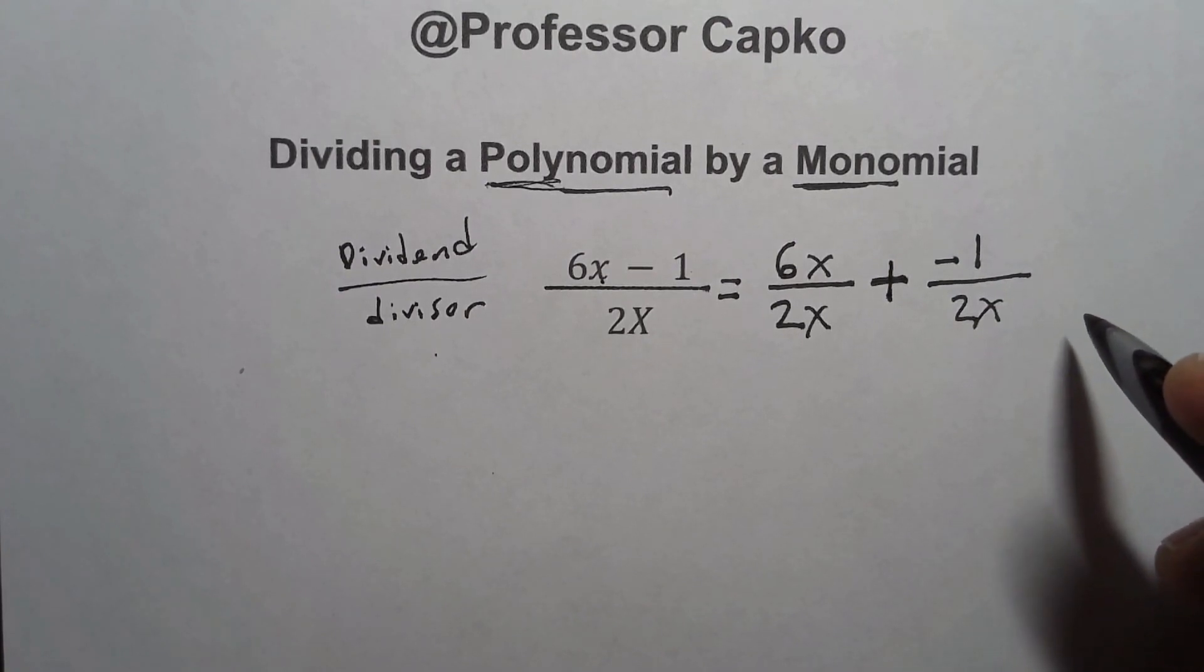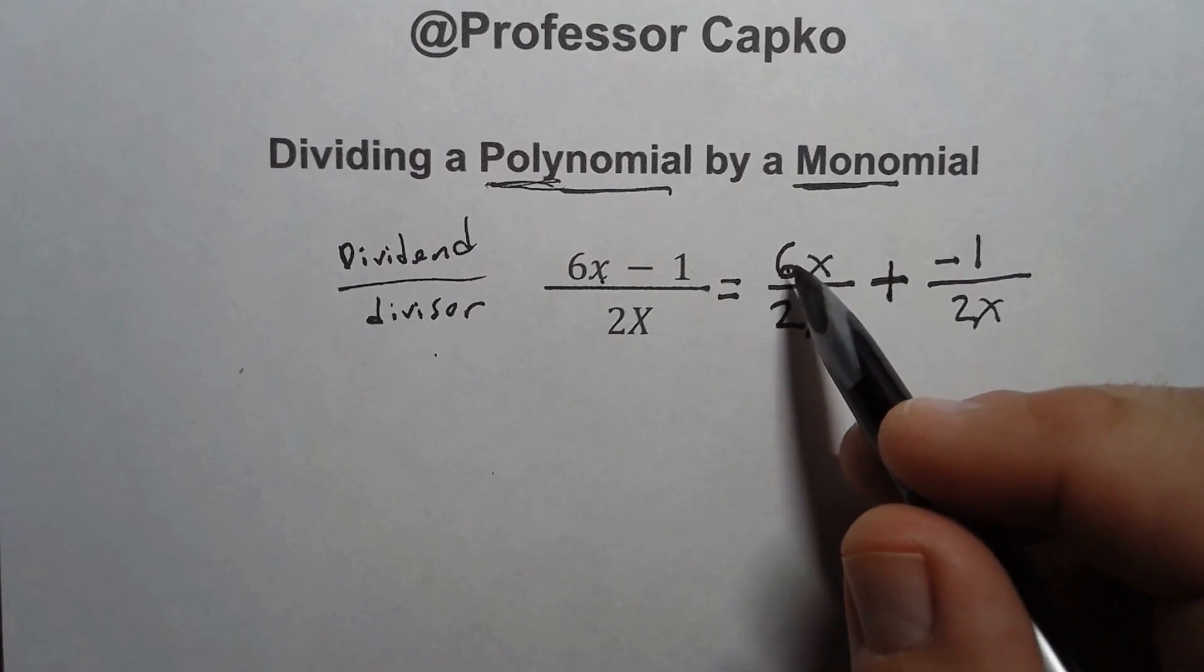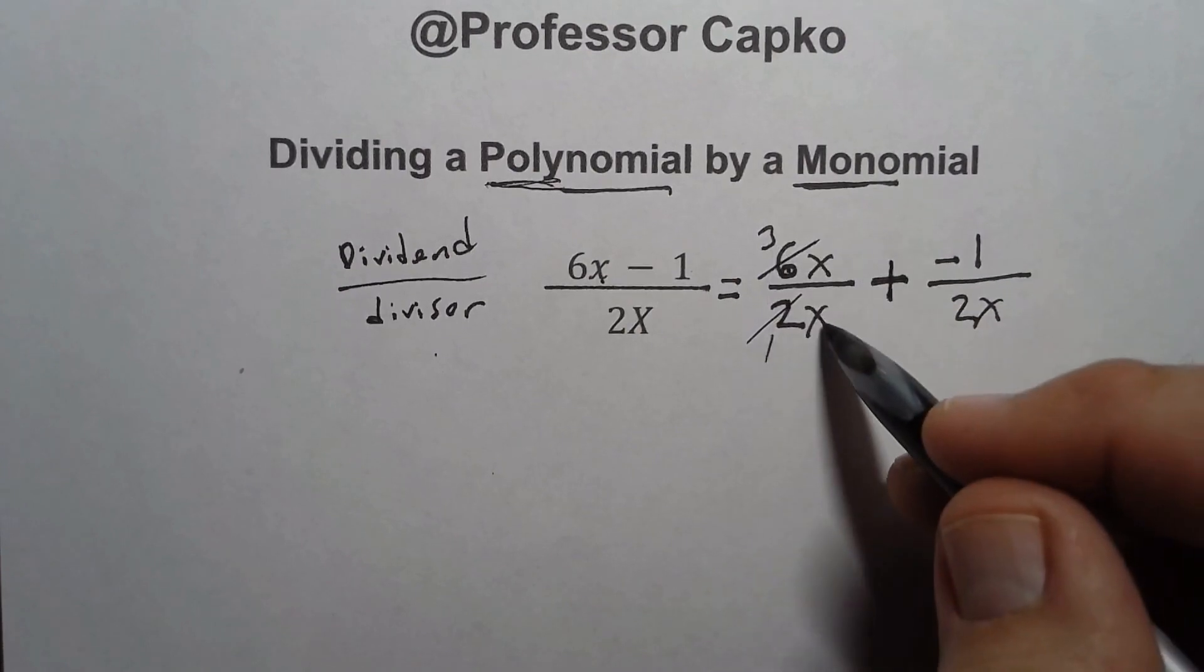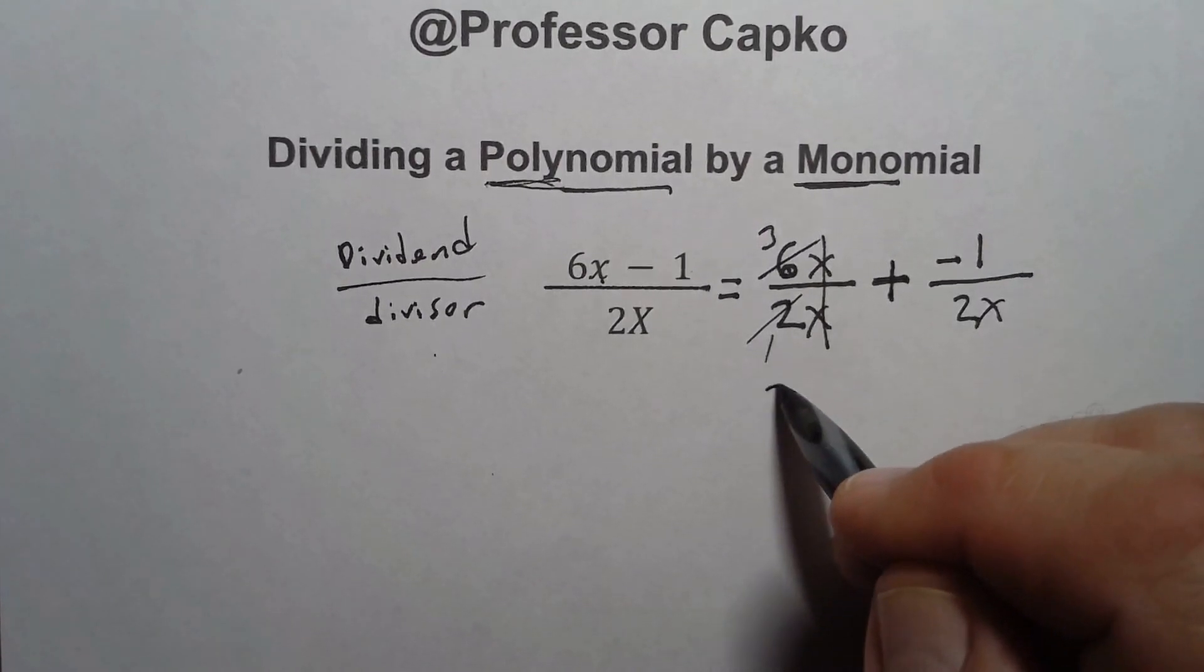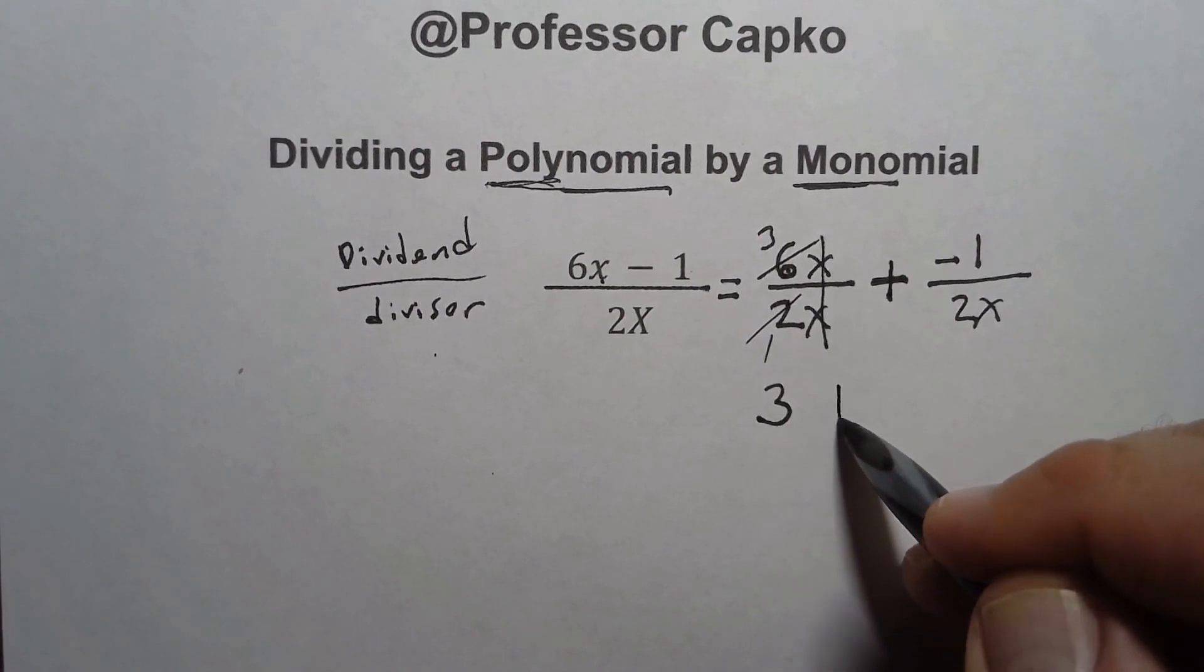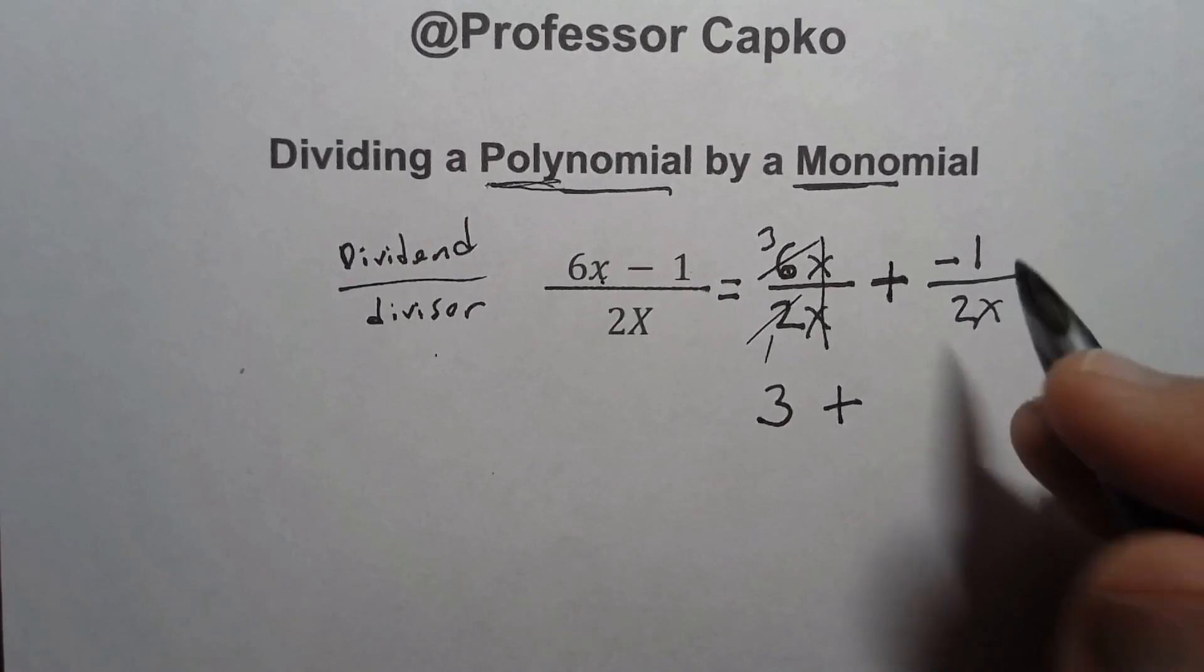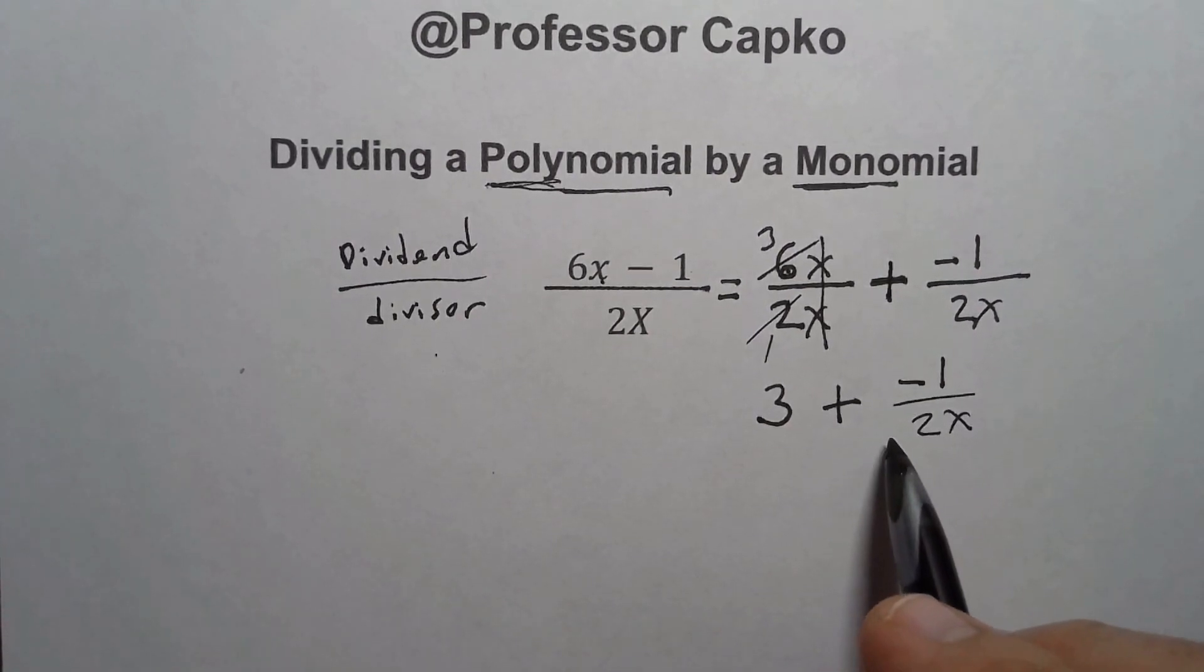Let's look at the next step. We can now see if there's anything we can reduce. In this case, we know that the 2 will divide into the 6 evenly - 2 goes into 6 three times, so I can reduce this to be 3. And we know that x over x, anything over itself is 1, so I can cancel those out. So I'm left with 3. Plus, nothing can be divided here - the 2 doesn't go into the negative 1 evenly, and there's no x's for the x to go into, so I'm just left with negative 1 over 2x.